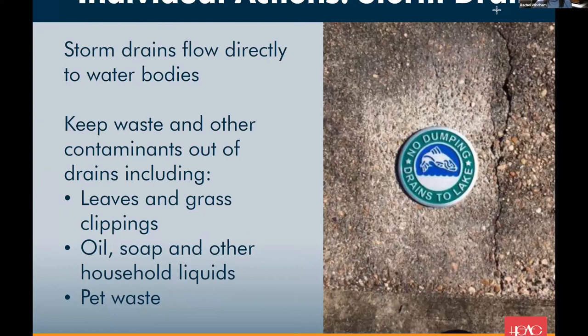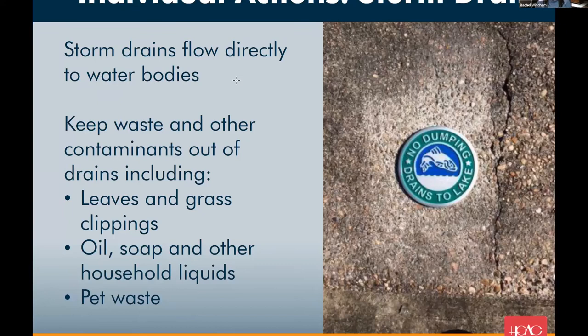Let's talk about storm drains. This photo was taken in the Woodlands near Lake Woodlands — a medallion put out by the San Jacinto River Authority to let people know that whatever is dumped near the storm drain will ultimately end up straight in the lake, because storm drains flow directly to water bodies with no treatment in between. Please keep waste and other contaminants out of drains — that includes leaves, grass clippings, oils, soaps, other household liquids, and pet waste. The way to remember it: only rain down the drain.